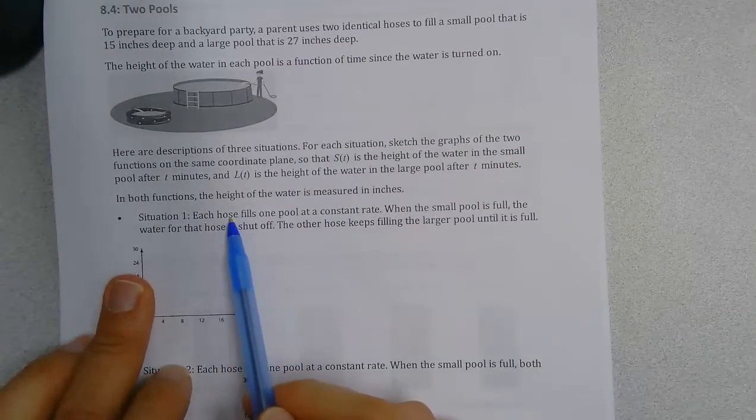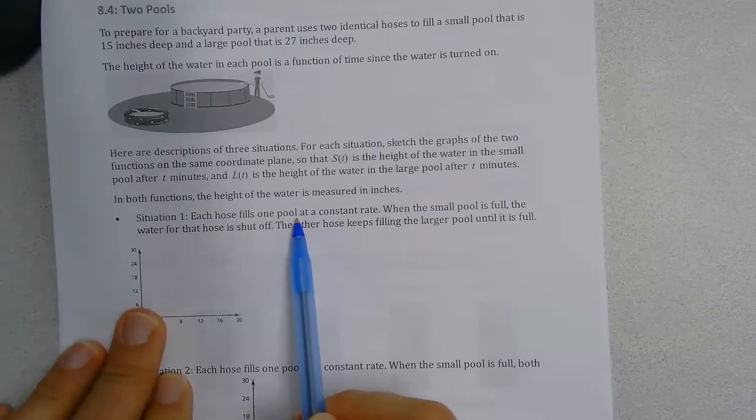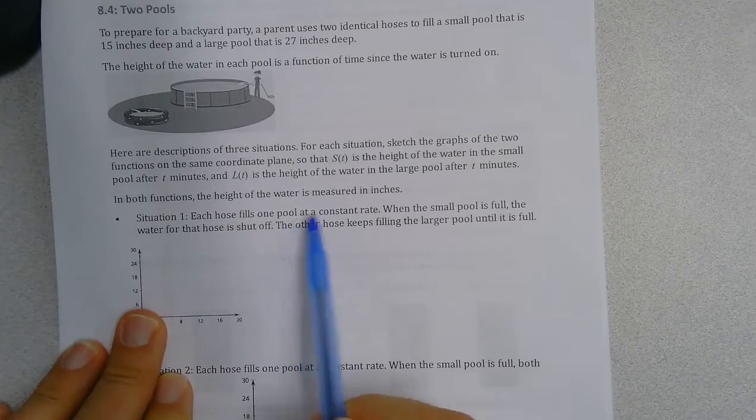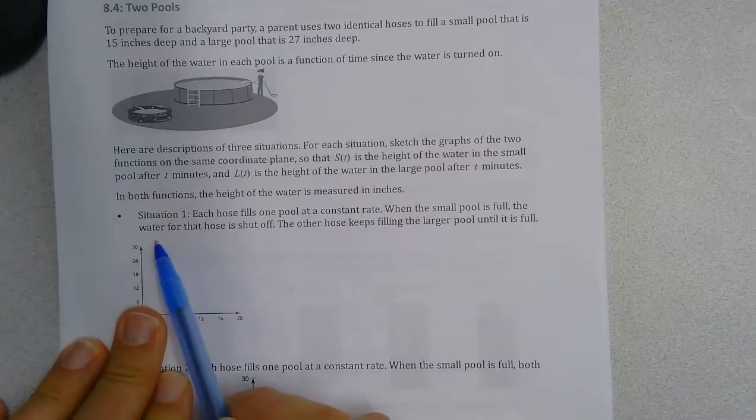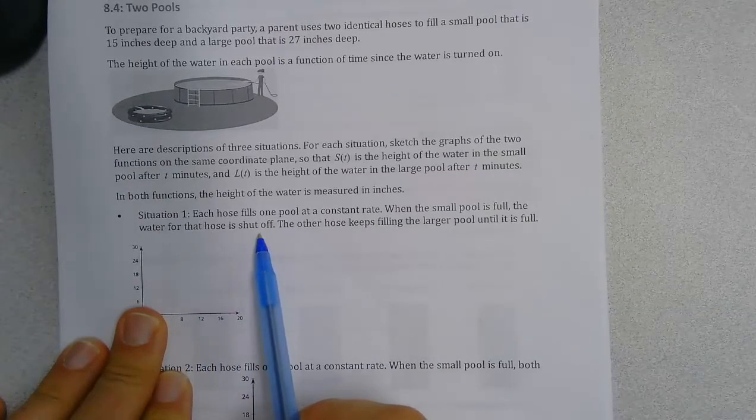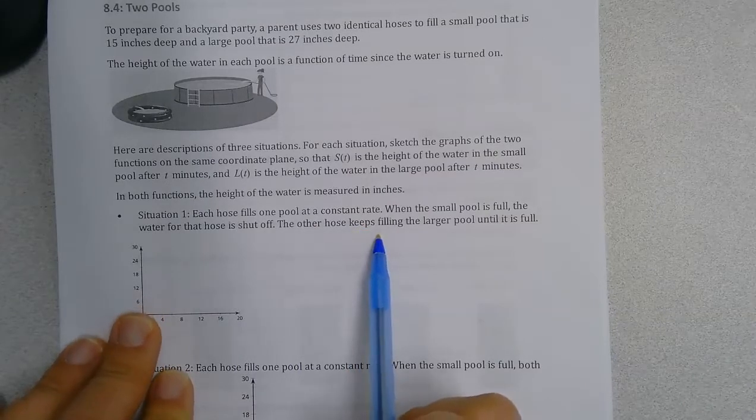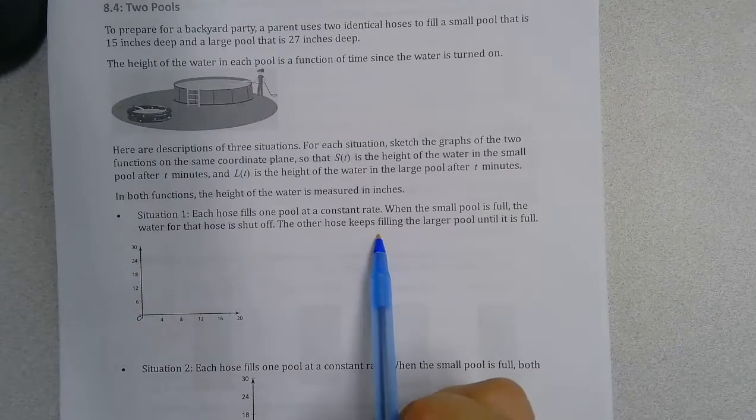Situation one: each hose fills one pool at a constant rate. When the small pool is full, the water for that hose is shut off. The other hose keeps filling the large pool until it's full.